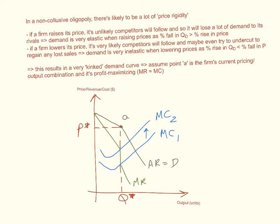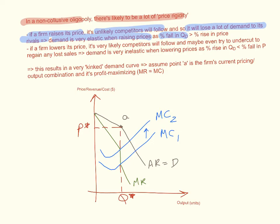Because of this prisoner's dilemma, in a non-collusive oligopoly there is likely to be a lot of price rigidity — prices don't really change much. If a firm raises its price, it's unlikely that its competitors will follow, and therefore it will lose a lot of demand to its rivals. Demand becomes very elastic when raising prices because the percentage fall in quantity demanded will always be much greater than the percentage rise in price.